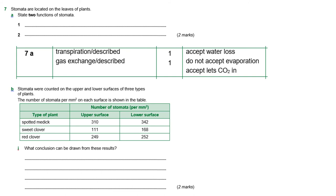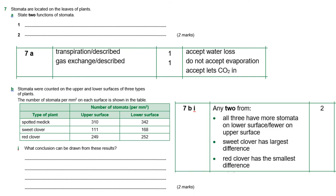Part B is getting to look at some data. It's still relating to stomata, so you have to think you've just been asked what the point of stomata are, so you need to think about that before answering your question. So stomata are counted on the upper and lower side surfaces of three types of plants. The number of stomata per millimeter squared on each surface is shown in the table. What can be drawn from these results? And what you should have noticed is that all three have more stomata on the lower surface than the upper surface. That is generally true of all plants because that bit's a bit more sheltered from the sun just evaporating the water too fast. So that's one thing you should have noticed. You should have noticed that sweet clover has the largest overall difference, the difference between upper and lower, and red clover has the smallest overall difference. So any two of those three will get you the mark.